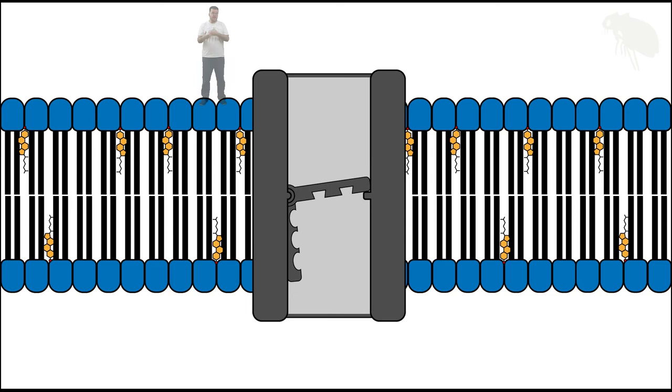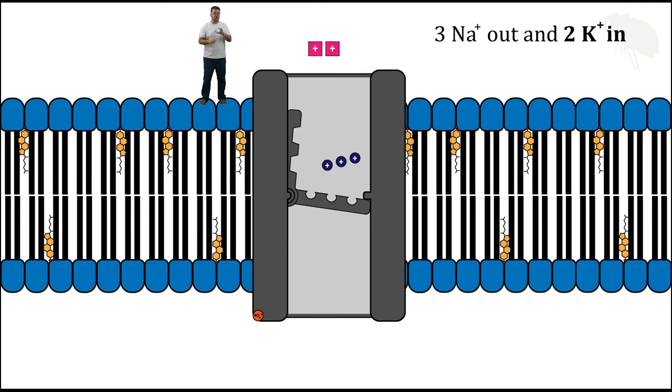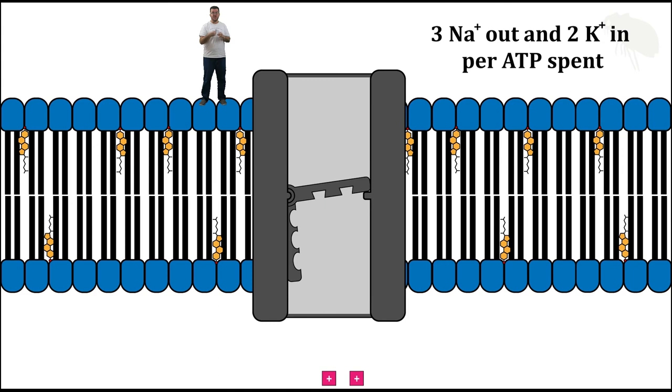As we watch it cycle for a few times below me, just bear in mind what we've seen. What this pump does is it moves three sodium ions out of the cell, two potassium ions into the cell, per ATP spent, per ATP converted to ADP by releasing its energy through its phosphate group. The bottom line here is this ratio: three sodium out, two potassium in, per ATP spent.